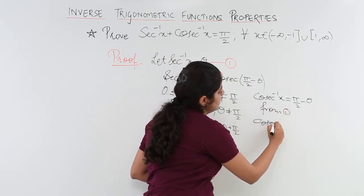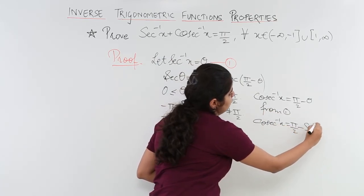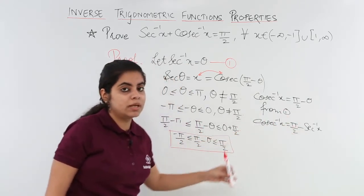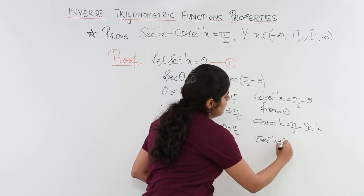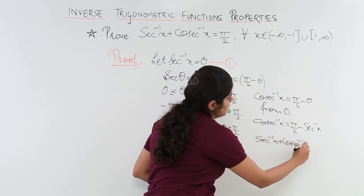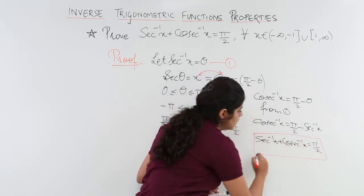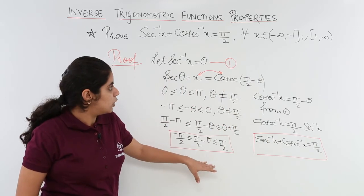So I put the value: csc⁻¹x = π/2 - sec⁻¹x. Now minus of sec⁻¹x will become plus. So it becomes sec⁻¹x + csc⁻¹x = π/2. Put it in a box and close the proof.